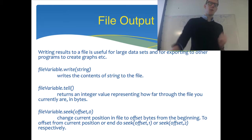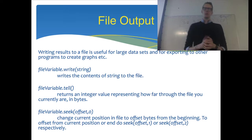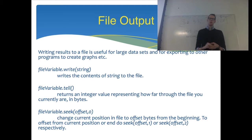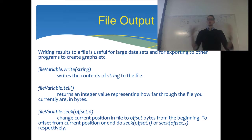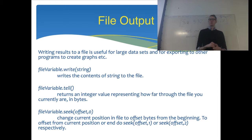For output files, we use the .write function the most. .write will write a string to a file — you create your output as a string, then call .write on your file variable and it will write whatever string you give it to the file.